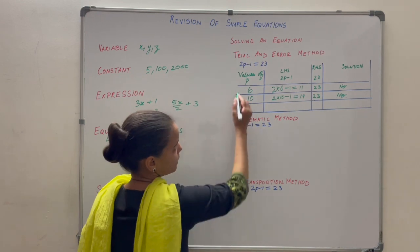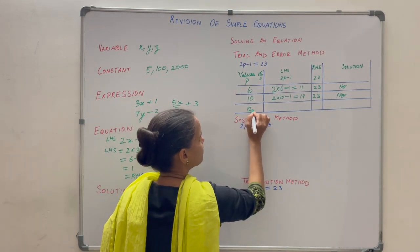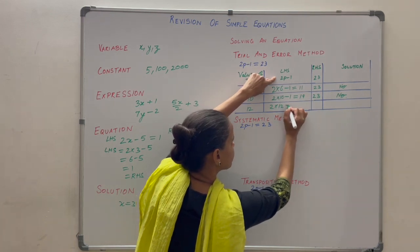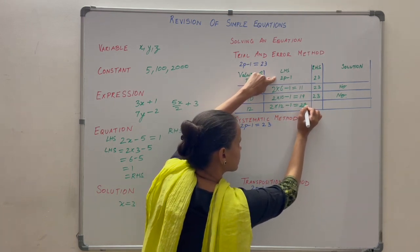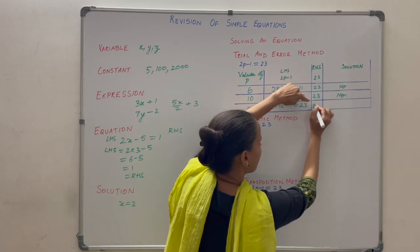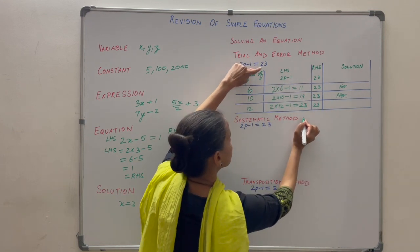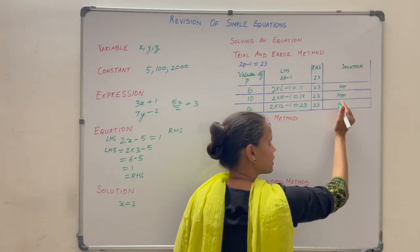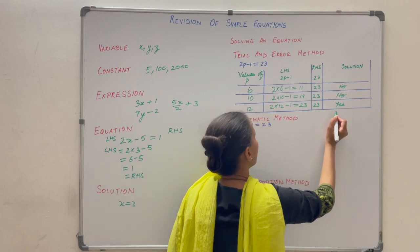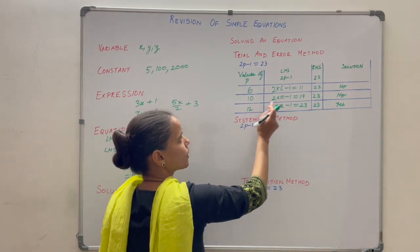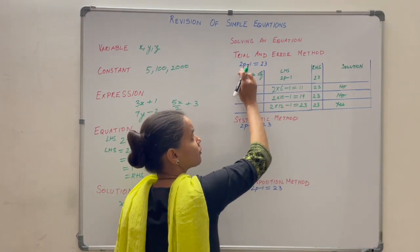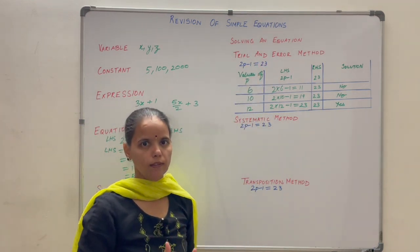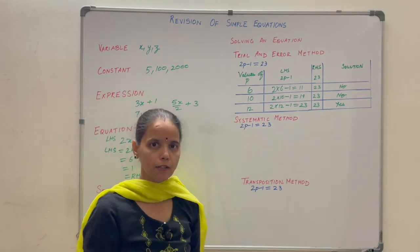Now let us take p equals 12. So 2 into 12 is 24, minus 1 is 23. Left hand side is 23, right hand side is 23. LHS equals RHS. So at p equals 12, the solution is found. p equals 12 is the solution of this equation. This method is called the trial and error method.